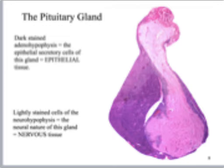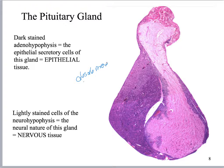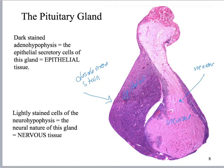Here is a photomicrograph of the pituitary gland. The epithelial cells absorb more stain because of how they are structured — this is your adeno-hypophysis. The neuro-hypophysis is made of neurons and picks up the stain to a much lesser extent. This goes back to the key distinction: if a chemical messenger is made in a neuron, we call it a neurotransmitter; if it's made in an epithelial cell, we call it a hormone.